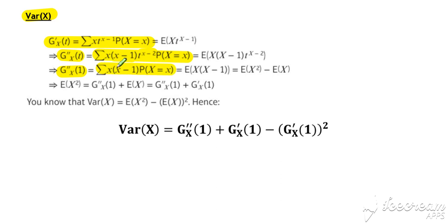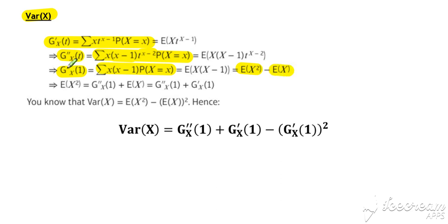If we multiply out the brackets, we get the expected value of x squared times p(x), which is the expected value of x squared. We also get the sum of x times p(x), which is the expected value of x. So g''(x) evaluated at 1 is equal to the expected value of x squared minus the expected value of x.